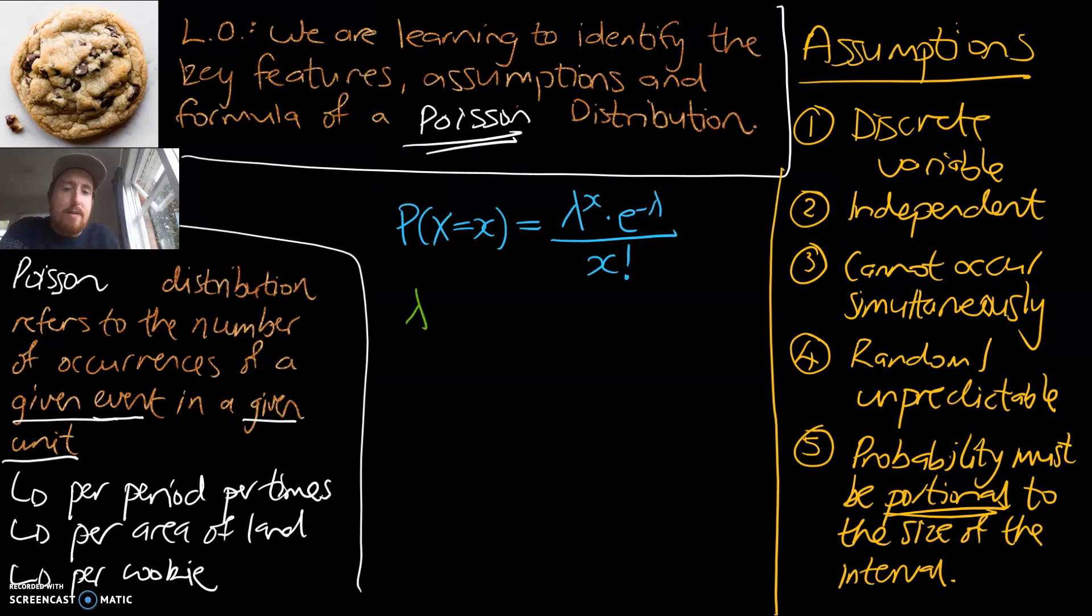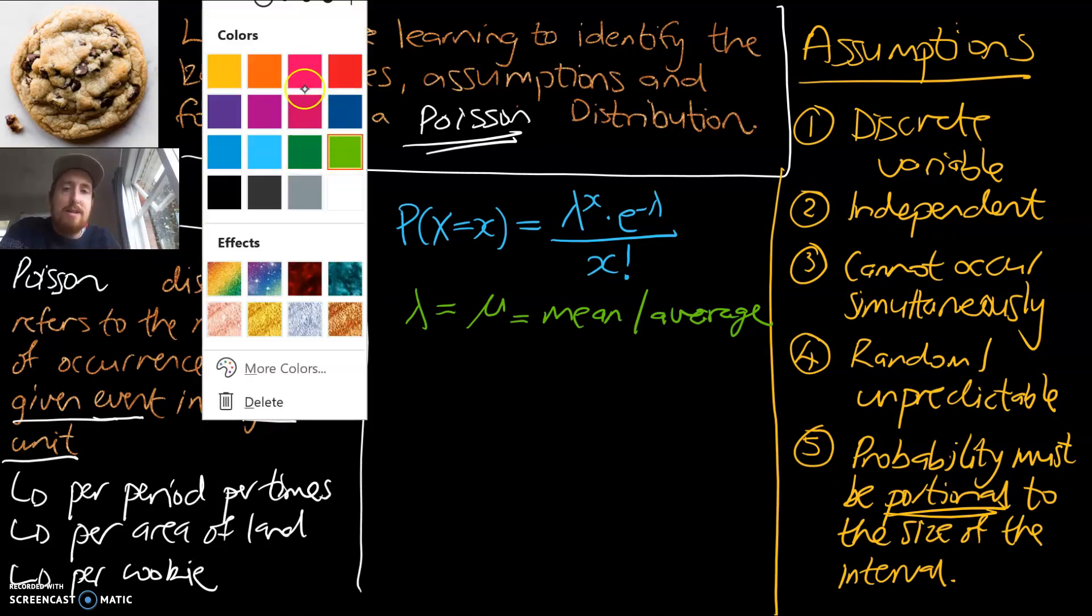So the first variable I want us to look at is that lambda, that funny looking H just up there. It pops up twice. And that lambda refers to the mean or the average of our data. For example, cars driving by - you would typically expect an average per hour. You'd be able to calculate the number of chocolate chips in a cookie and find an average that represents that.